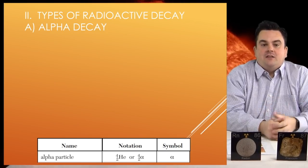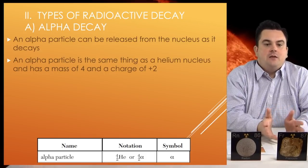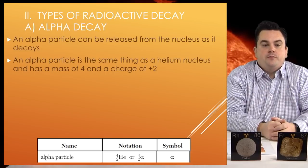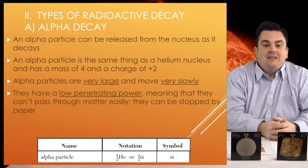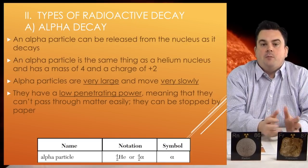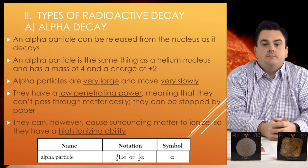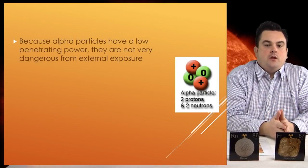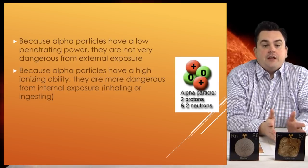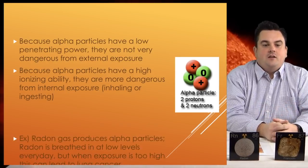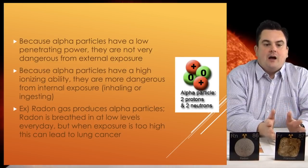Types of radioactive decay. Let's start with alpha decay. An alpha particle can be released from the nucleus as it decays. An alpha particle is the same thing as a helium nucleus and has a mass of 4 and a charge of +2. Alpha particles are very large and move very slowly. They have a low penetrating power, meaning they can't pass through matter easily — they can be stopped by paper. They can, however, cause surrounding matter to ionize, so they have a high ionizing ability. Because alpha particles have a low penetrating power, they are not very dangerous from external exposure. Because they have a high ionizing ability, they are more dangerous from internal exposure — inhaling or ingesting. For example, radon gas produces alpha particles. Radon is breathed in at low levels every day, but when exposure is too high, this can lead to lung cancer.